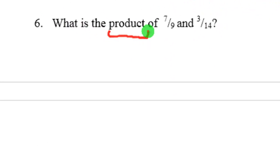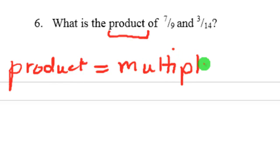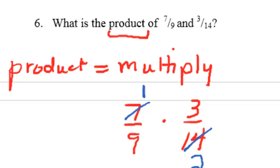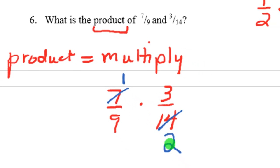Alright, this one says, what is the product? When you see the word product, that means multiply. So they just want you to multiply 7/9 times 3/14. We can multiply straight across and then simplify, but I like to do something a little differently. If you notice that things reduce, that they cancel, then do them before you multiply. 7 and 14, 7 goes into both of these. So we're going to divide 7 by 7, that leaves us with 1. And divide 14 by 7, that leaves us with 2.